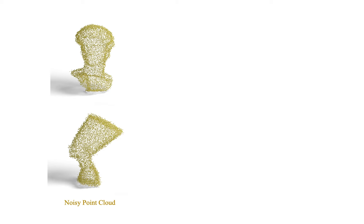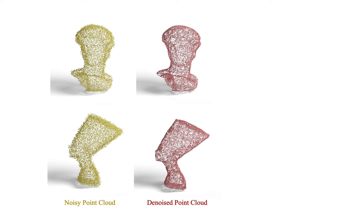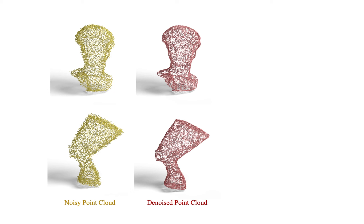Similarly, LGL can also be applied to score-based point cloud denoising networks. The denoising process will iteratively update each point's position in order to move it closer to the predicted surface. Embedding LGL in the denoising loop can improve the point distributions without introducing extra distortion.